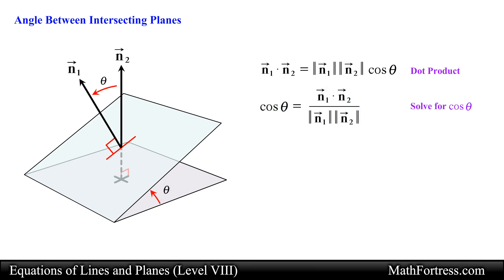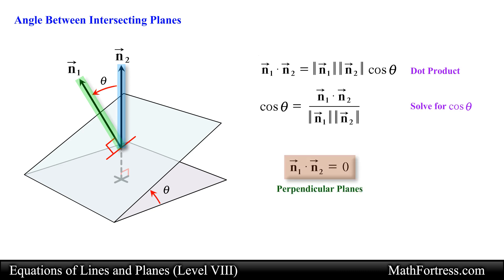As a consequence, two planes with normal vectors n sub 1 and n sub 2 are perpendicular if the dot product between them is equal to 0, and parallel if one vector is a scalar multiple of the second vector.